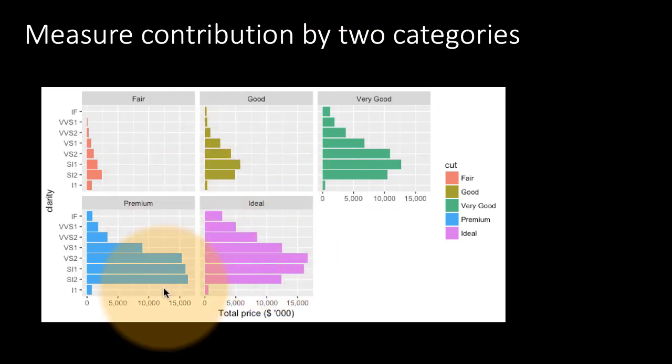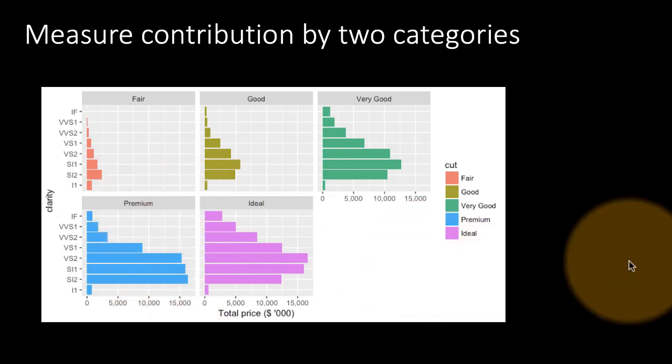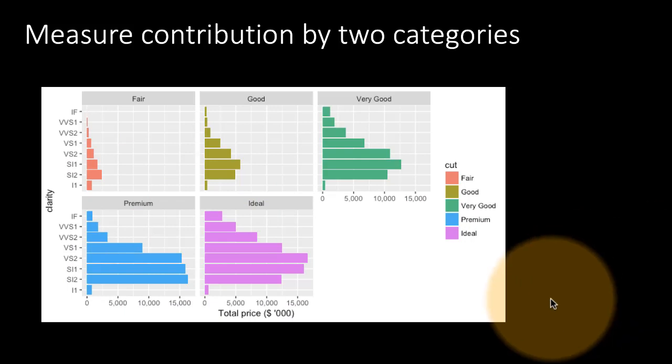Once again, we're able to get some information from this. We see clearly that the combination of ideal cut with VS2 or SI1 clarities has the highest contribution to our overall sales in terms of total price. You've also got some big ones going on here: SI1, SI2 and premium. Those kinds of insights we might get which we might otherwise be missing.